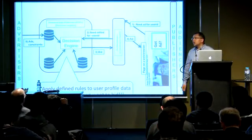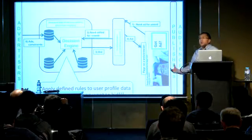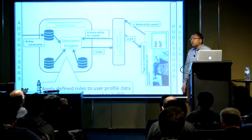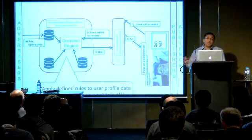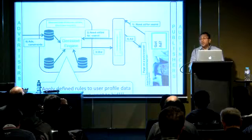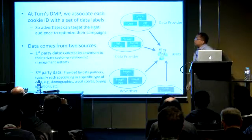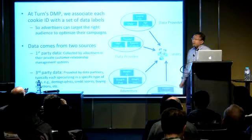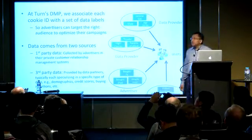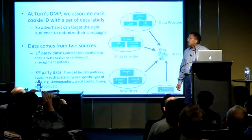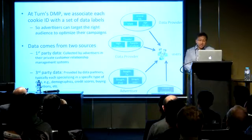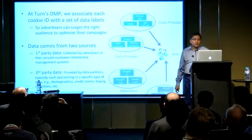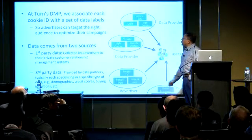When I talked about constraints, we are focusing on hard targeting constraints. These constraints are defined in terms of user profile data to determine whether a particular bid instance matches that user. Turn as a demand side platform has a large pool of user IDs or cookie IDs. These are data where the key is a cookie ID and the values are a bunch of categorical data labels. None of this information is PII or personally identifiable — all the data is anonymized.